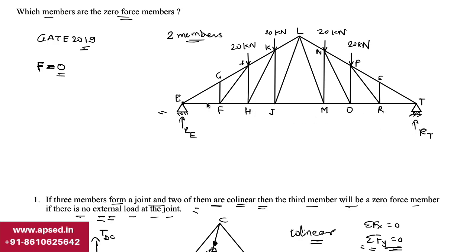Applying Rule 1, we look for joints where three members meet with two being collinear. On the bottom chord, joints F, H, J, M, O, and R all have four members meeting, so no conclusion can be drawn there. On the top chord, joint L has four members. Joints K and I each have four members plus external loads acting, so we cannot apply the rule there either.